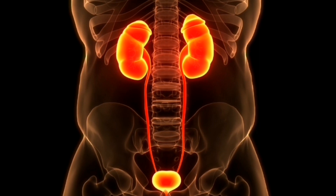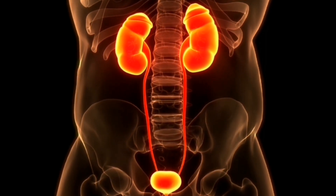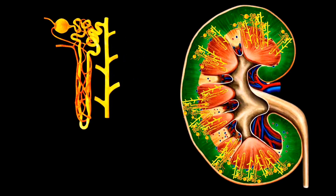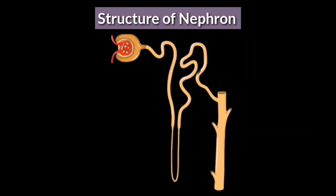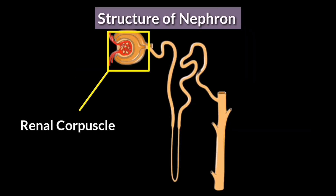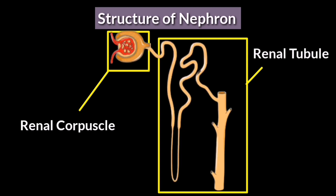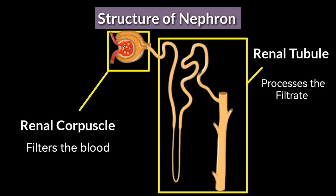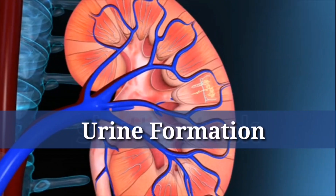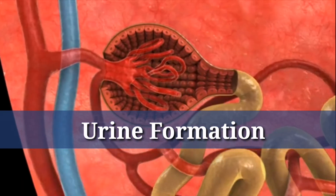Within each kidney there are millions of tiny filtration units called nephrons. These nephrons are responsible for the formation of urine. Each nephron consists of a renal corpuscle and a renal tubule. The renal corpuscle filters the blood, while the renal tubule processes the filtrate further to form urine.